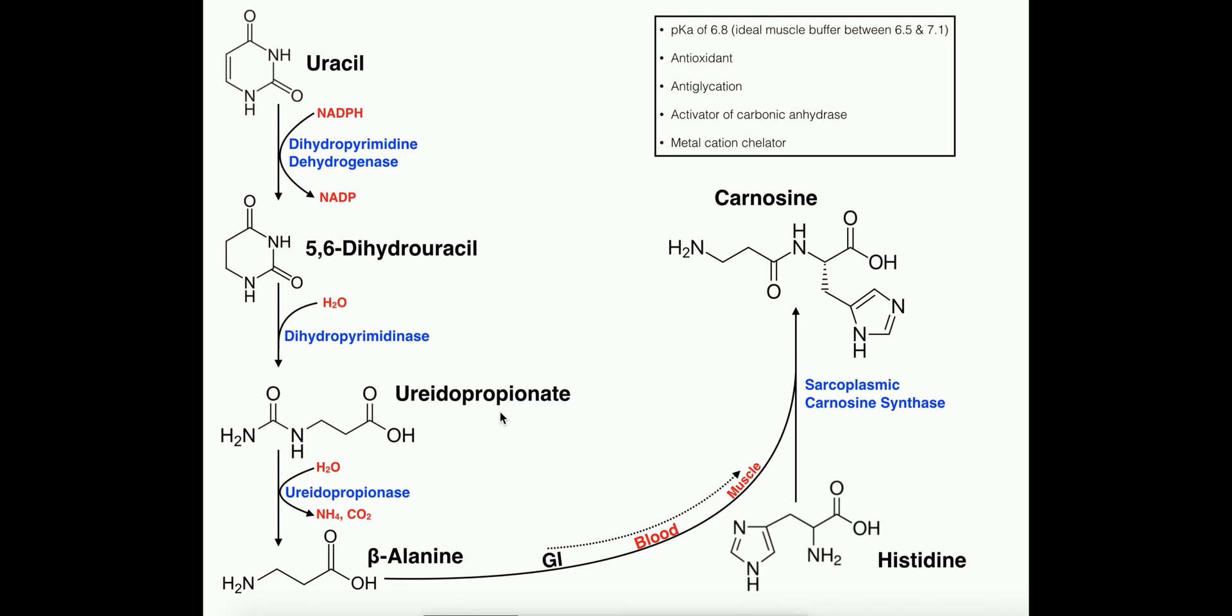This moiety over here - this NH2 with the carbon and double bond oxygen - is ultimately going to be removed as ammonia and CO2, catalyzed by ureidopropionase in a hydrolytic reaction. What's left on the right side of the molecule is beta-alanine, which is a non-proteinogenic amino acid not found in proteins but vital in skeletal muscle physiology.